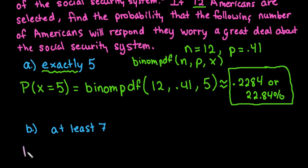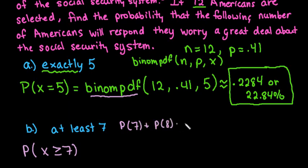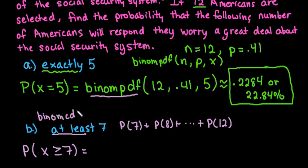At least seven means greater than or equal to 7, so you'd need to add P(7) + P(8) + P(9) + P(10) + P(11) + P(12) — very time-consuming using binomPDF individually. The shortcut is binomCDF, which is used whenever the problem doesn't say exactly. You still use n, p, x, but remember: the calculator starts at zero and adds until you tell it to stop.